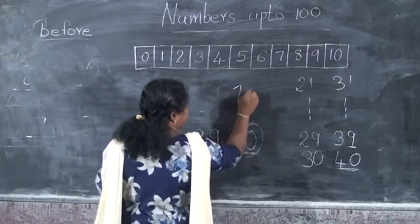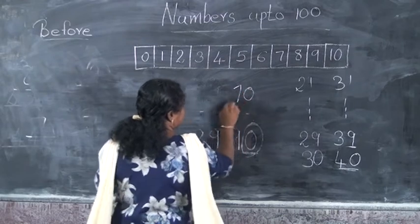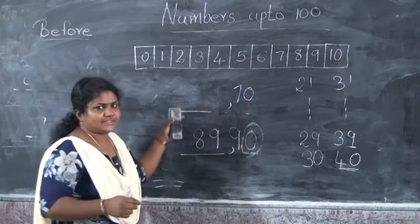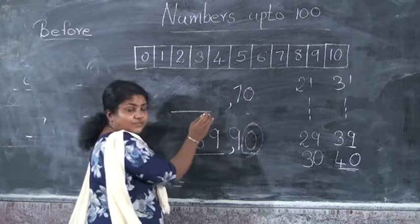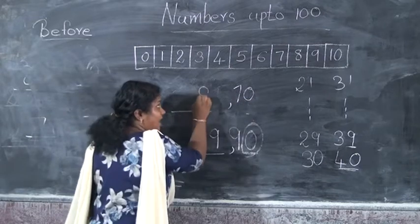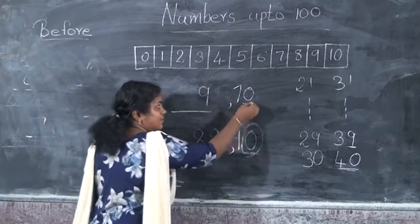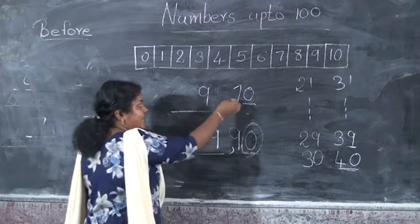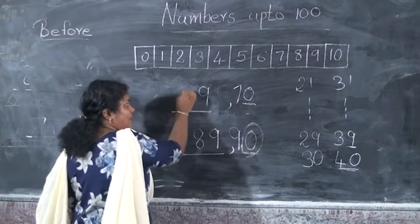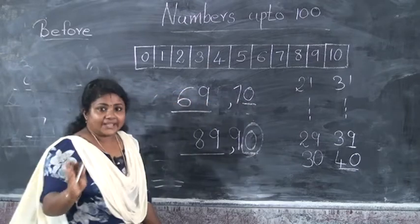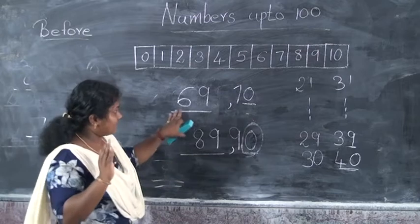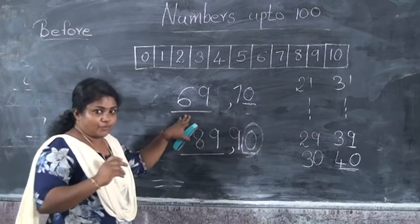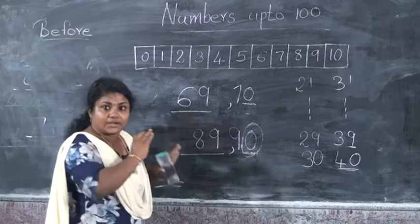And the next number: 70. Which number will come before 70? 0's before number is 9. Here, 0 in the 1s place becomes 9. And in the 10s place: 7 minus 1 is 6. So the answer is 69. The before number of 70 is 69.